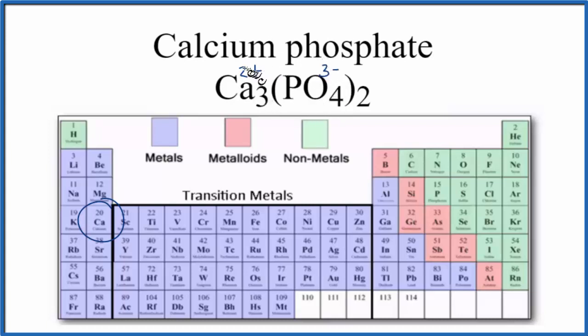So when you look at it, 3 times 2 plus, that's 6 plus. And then over here, 2 times 3 minus, that's 6 minus. So these two ions, they balance each other out. We have a net charge that's 0.